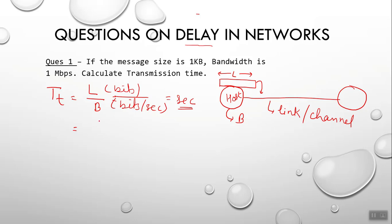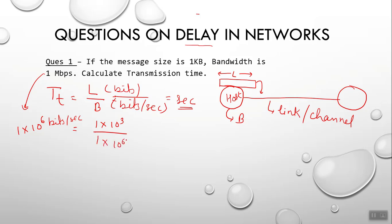For example, if bandwidth is 1 Mbps and packet size is 1 Kb: 1 Kb is 1×10^3 bits and 1 Mbps is 1×10^6 bits per second. Dividing gives 10^(3−6) = 10^(−3), which equals 1 millisecond. So the transmission time is 1 ms.